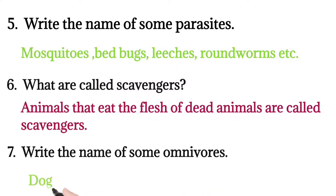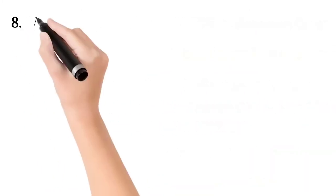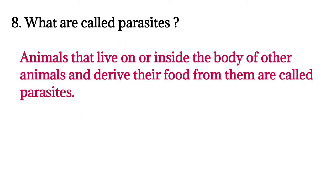Seven: write the name of some omnivores - dog, cat, bear, crow, rat, etc. Eight: what are called parasites? Animals that live on or inside the body of other animals and derive their food from them are called parasites.